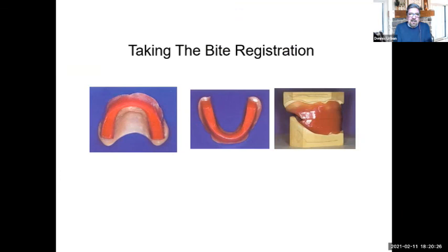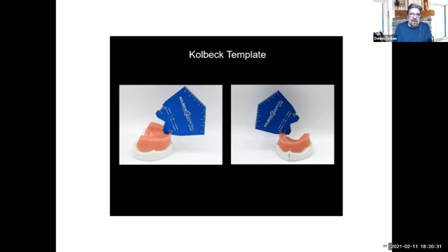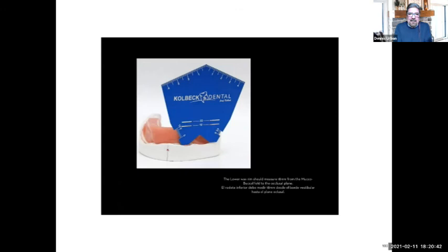Another tool for bite registration is the callback template — this gives you the exact thickness on the wax rim in both the posterior and anterior regions, and also gives you the height you need. You can see it shows 18 millimeters on the lower from the periphery to the incisal edge, and it also has a 22 millimeter mark for the upper. When you put this on the model, you stick a blade right through those slots at the 10mm, 22mm, and 18mm markings. It's a great little tool called the callback technique.